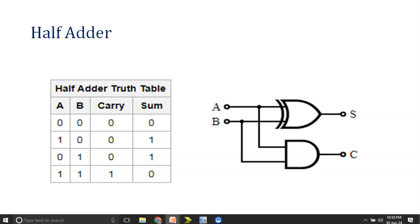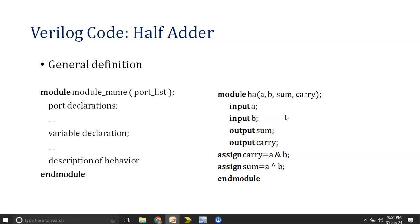You are able to see the half adder truth table where you have two inputs A and B. As there are two inputs, there are four options: 0-0, 0-1, 1-0, and 1-1. You are able to see the values of carry and sum, and on the right hand side you are able to see the digital circuit related to the half adder. Now whenever you are writing a Verilog code there are some structures in which you need to write.